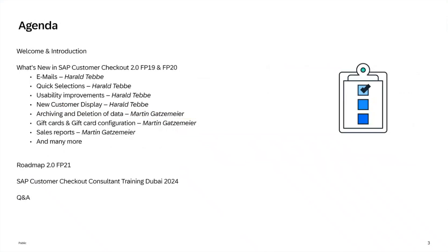Today we will show you the new features from Feature Pack 19 and 20. Harald will start with new functionalities for emails, quick selections, usability improvements, and our new customer display plug-in. Then Martin will continue with features for archiving and deletion of data, gift card improvements, new gift card configuration, and sales reports. We will then cover the roadmap for Feature Pack 21 coming in Q4 this year, upcoming training in Dubai in November, and the Q&A session.